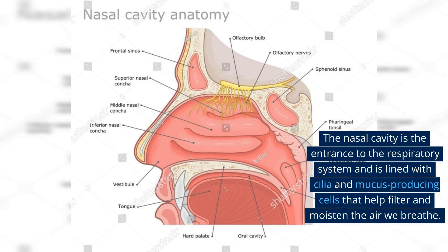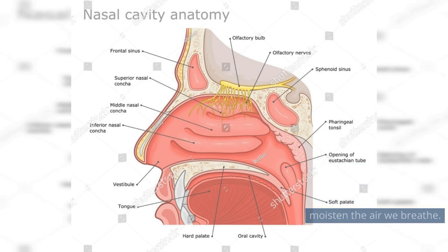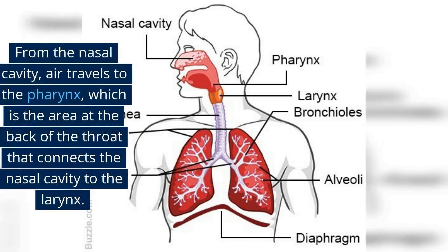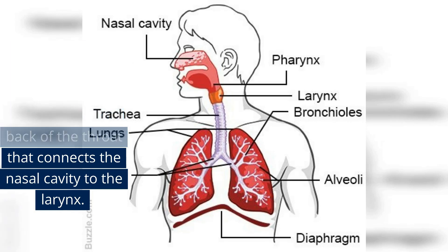The nasal cavity is the entrance to the respiratory system and is lined with cilia and mucus-producing cells that help filter and moisten the air we breathe. From the nasal cavity, air travels to the pharynx, which is the area at the back of the throat that connects the nasal cavity to the larynx.